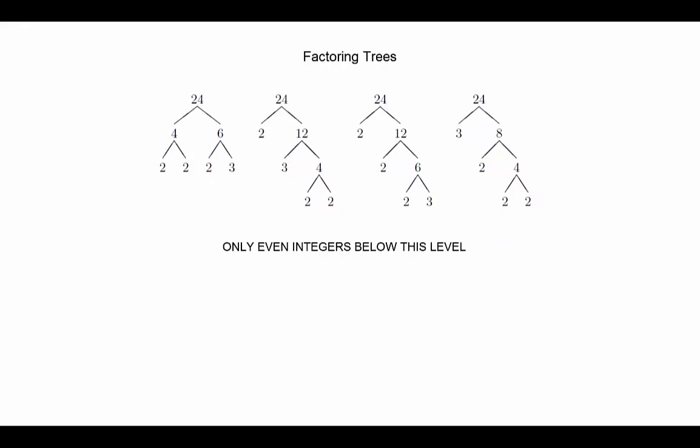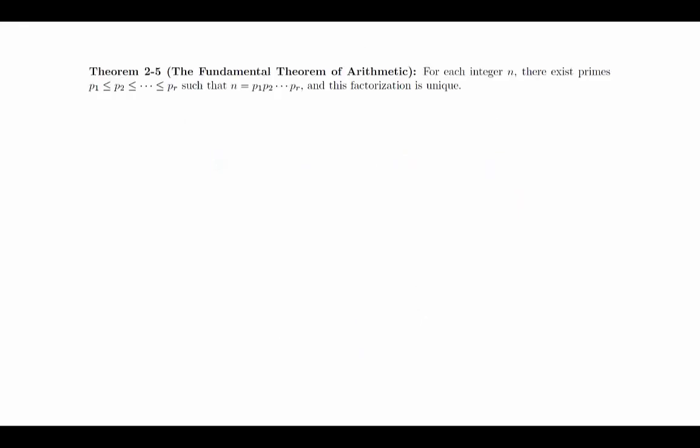This may seem completely obvious based on your experiences, but it turns out that there are many number systems for which this simply isn't true. For example, if we were to use the number system consisting of only even integers, there are numbers like 36 that we can factor as either 6 times 6 or 2 times 18, but neither of those factorizations can be broken out any further unless we use values that aren't even integers. There's an important lesson here about not letting your current set of experiences define the universe of possibilities. In fact, the discovery that unique prime factorization fails in other number systems opened the doors for new areas of mathematics. Here's the formal statement: the fundamental theorem of arithmetic. For each integer n, there exists an increasing list of primes p1 through pr such that n is the product of these primes, and this factorization is unique.